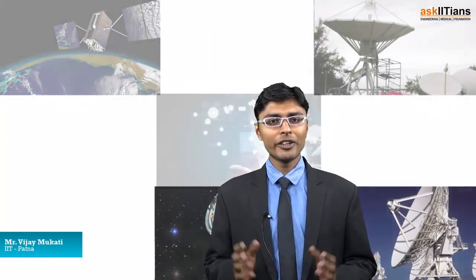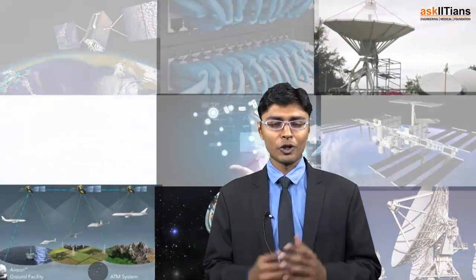Hello students. In this part we are going to study two different types of analog modulation process: amplitude modulation and frequency modulation. In amplitude modulation, the amplitude of the carrier wave is changed in accordance with the instantaneous value of the modulating signal. In frequency modulation, the frequency of the carrier wave is changed in accordance with the modulating signal. So let's start with amplitude modulation.